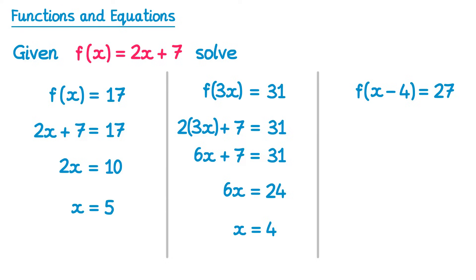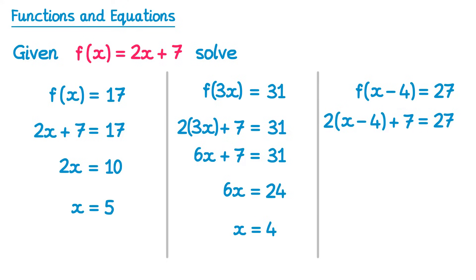It's a similar idea with this final equation. The right hand side equals 27, and on the left hand side we start with f(x) = 2x + 7, but we're going to replace all of the x's with the new input x − 4. So we replace x with (x − 4), giving 2(x − 4) + 7 = 27. Multiplying out the bracket: 2 lots of x is 2x, and 2 lots of negative 4 is negative 8, then plus 7 equals 27.